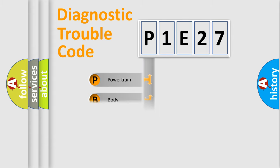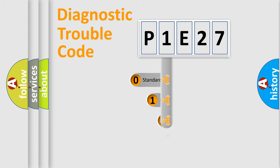Powertrain, body, chassis, network. This distribution is defined in the first character code.